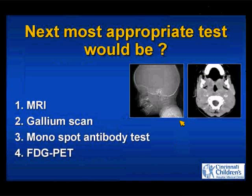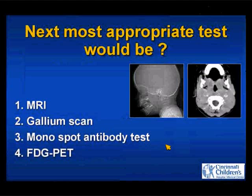Given these images, what is the next most appropriate test? MOC likes to do this — you don't get the answer and they go on and ask you another question, not really knowing what the first question's answer was. Do we do an MR, a gallium scan, a monospot antibody test, or FDG PET?